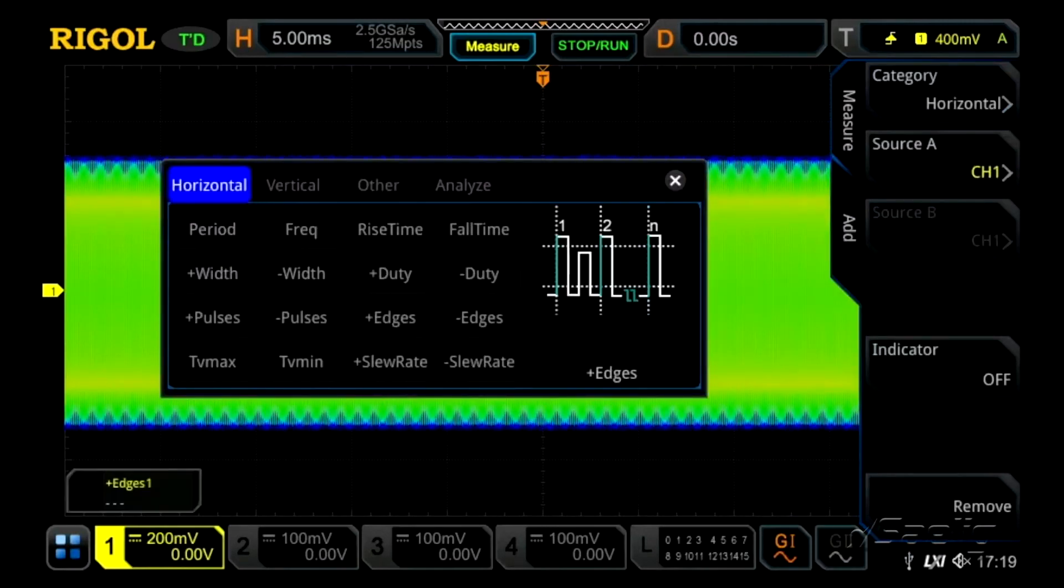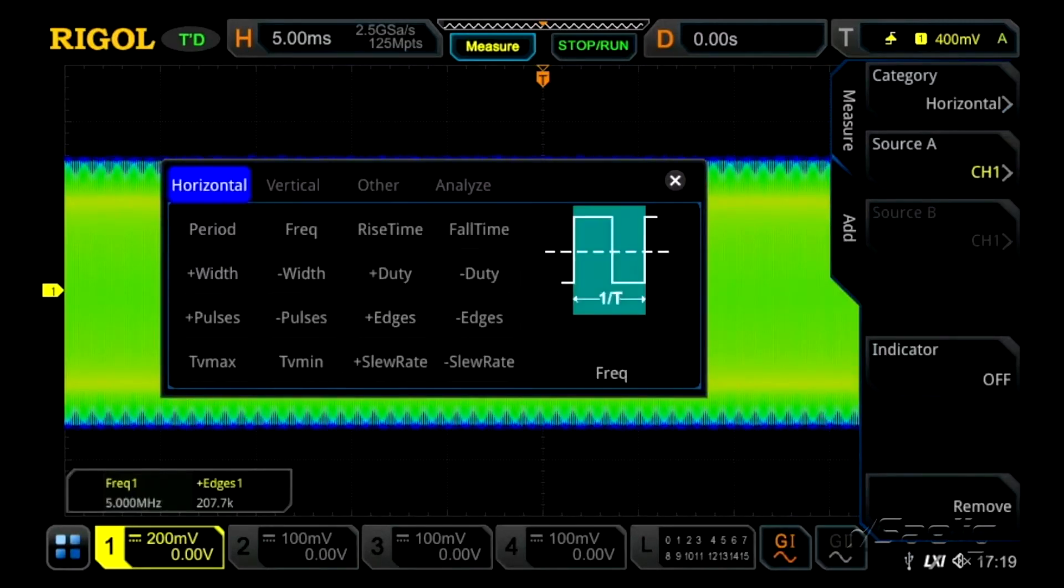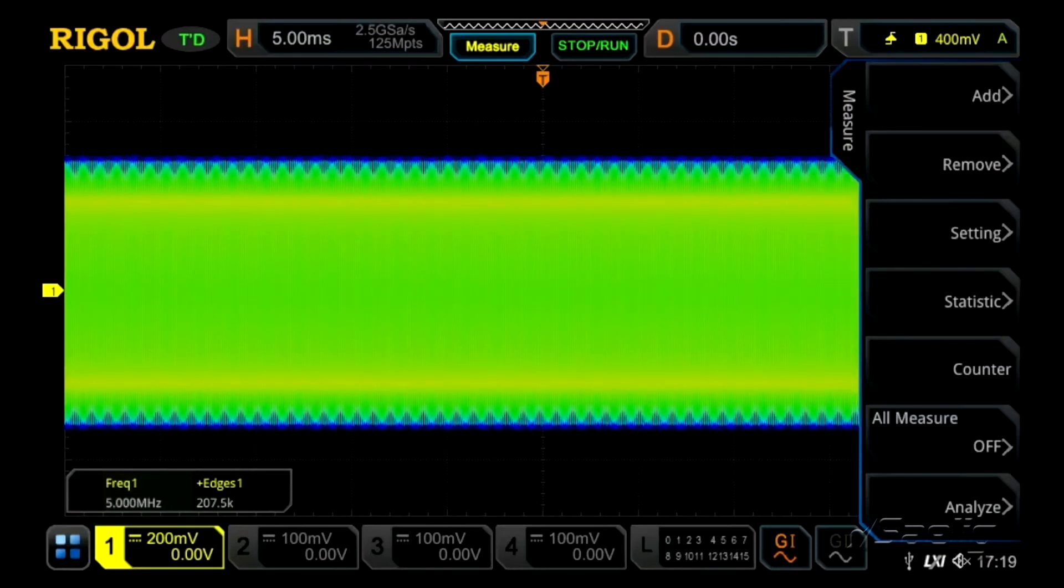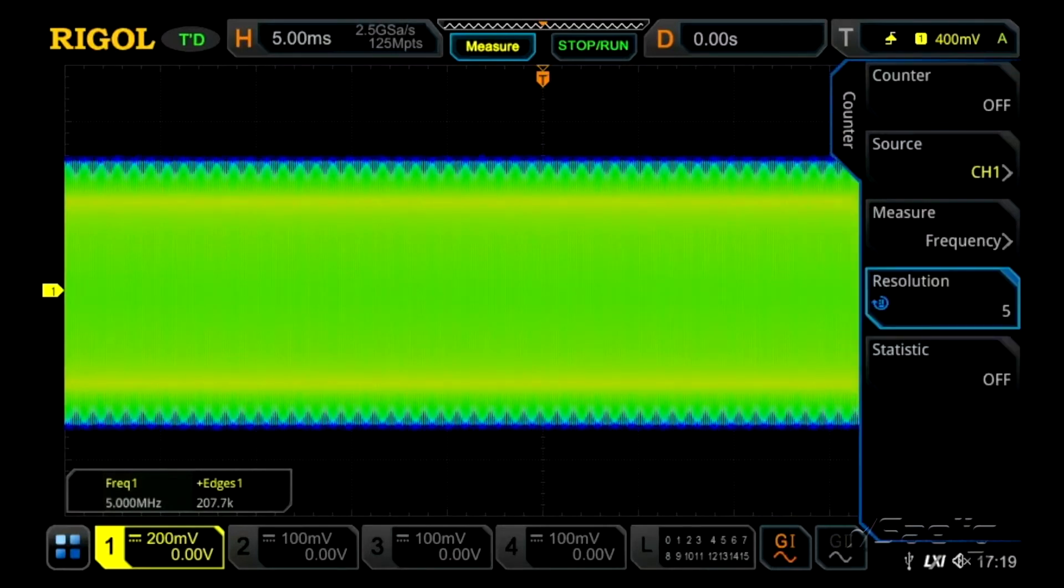On a normal oscilloscope, if you add measurements like edges and frequency, you get undersampled data and aliasing, just like these measurements here.